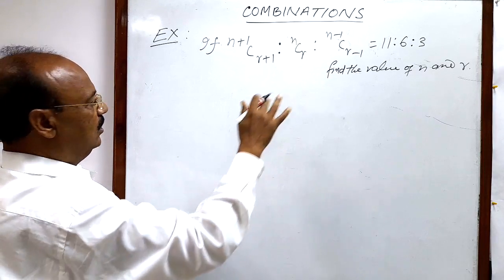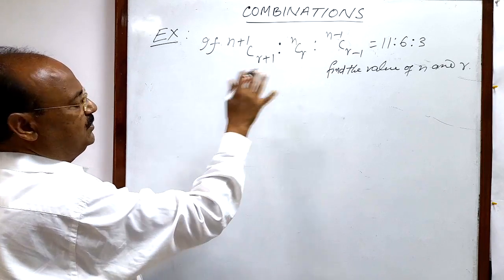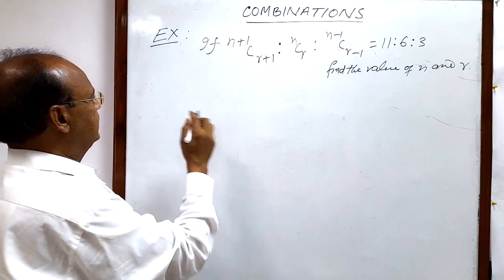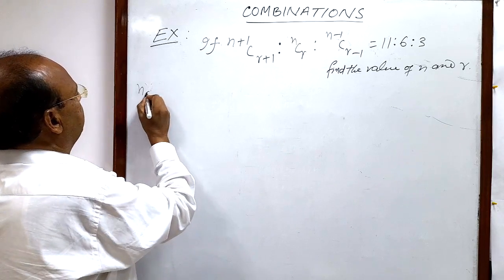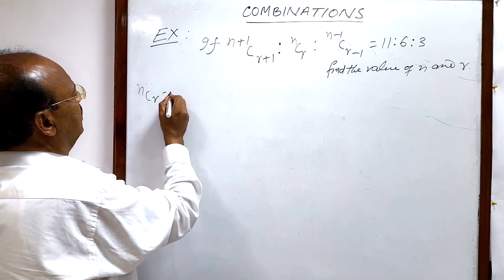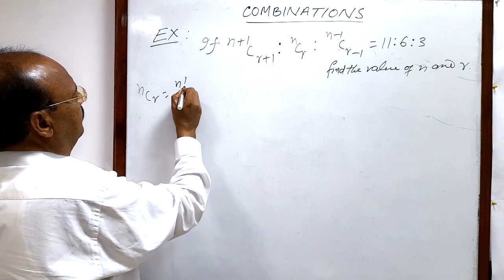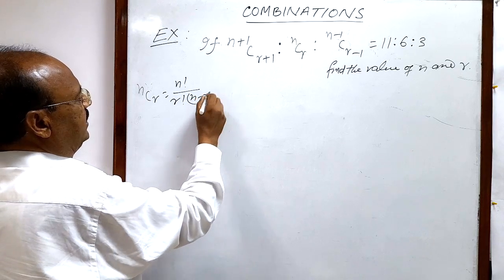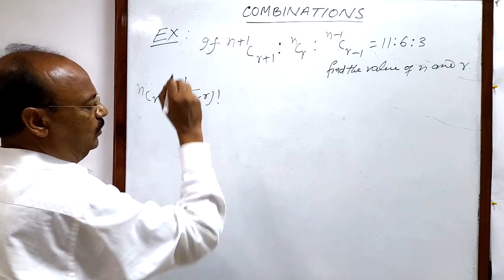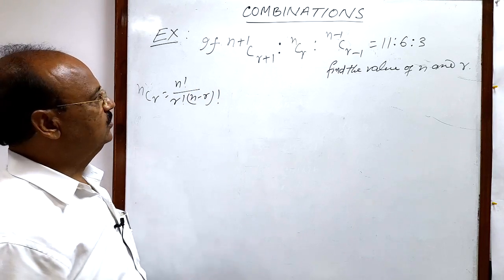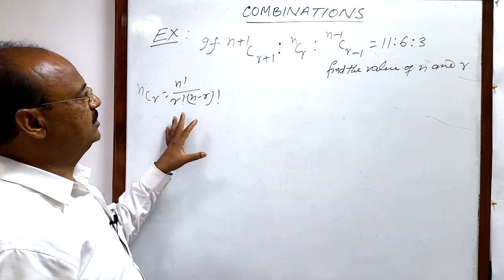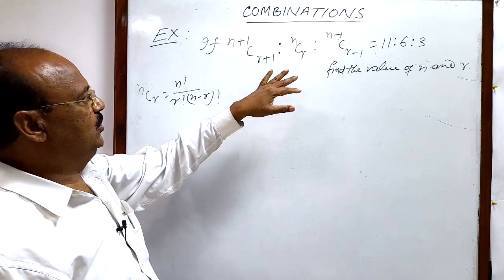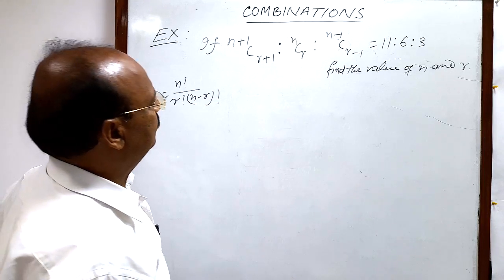For this question we must recall the formula which we have already studied previously: nCr is equal to n factorial divided by r factorial into (n minus r) whole factorial. Let us use this formula for solving this question.